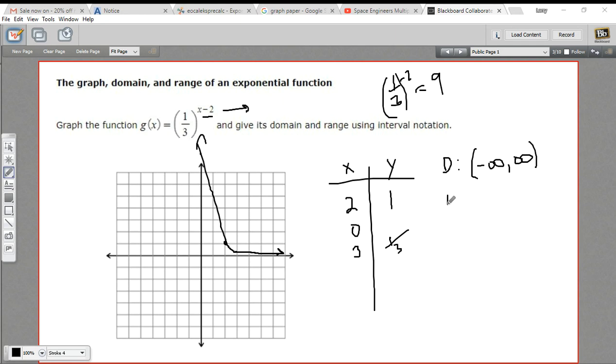The range, you can probably see from the graph that this never drops below zero. And it never really reaches zero either. The value y equals zero is the asymptote for this function. So the y values are going to go from zero, but not including zero.